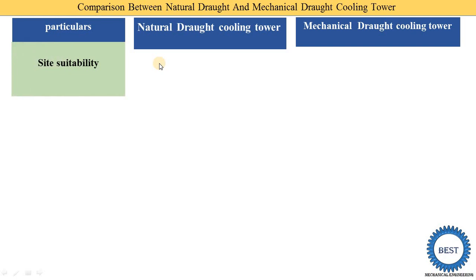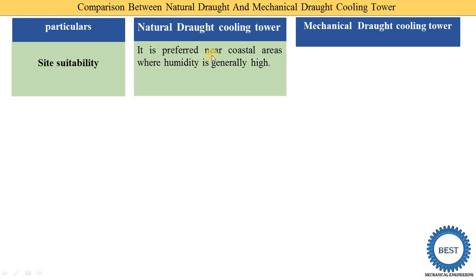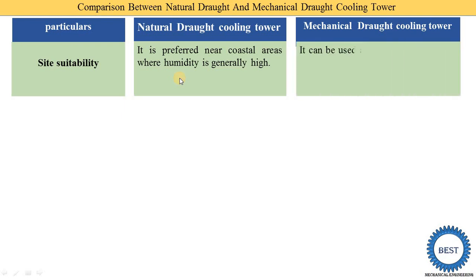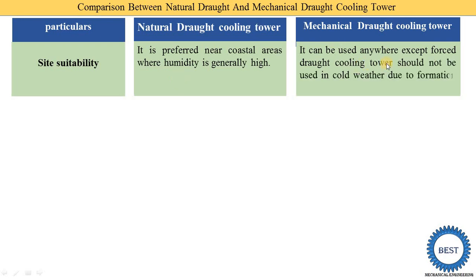The next difference is site suitability — at which location we can use natural draft or mechanical draft cooling towers. Natural draft cooling towers are suitable and preferred near coastal areas where humidity is generally high. Mechanical draft cooling towers can be used almost anywhere, except forced draft cooling towers should not be used in cold weather conditions due to the formation of ice on the blades of the fan.